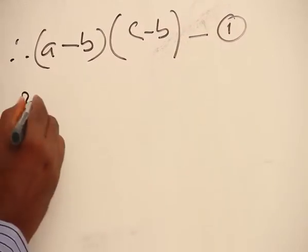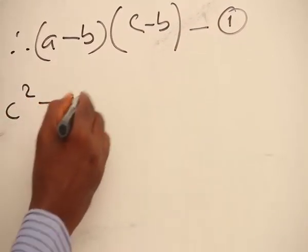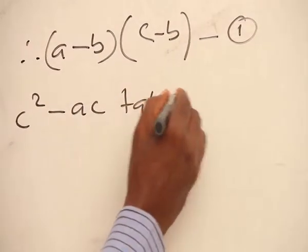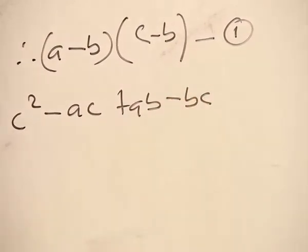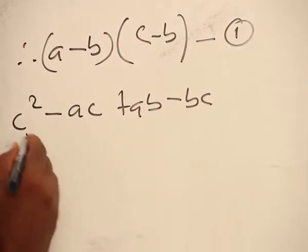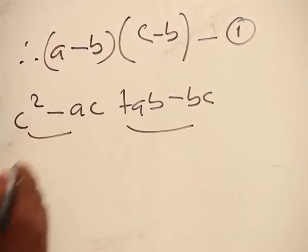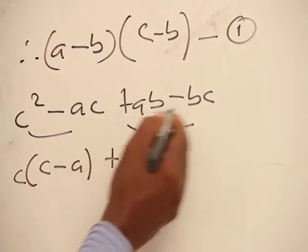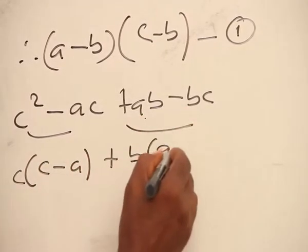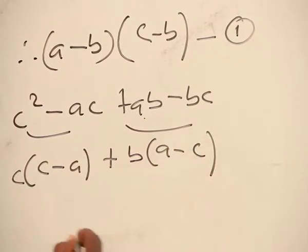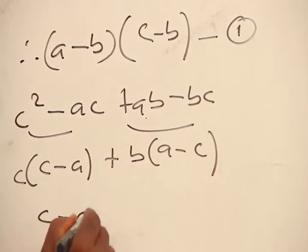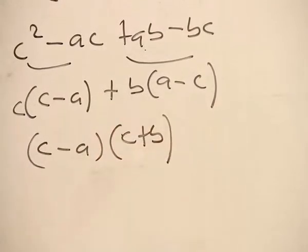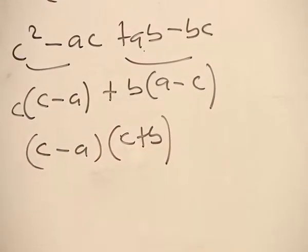Then we take the denominator: c squared minus ac plus ab minus bc. Now, if you look at this, c is common, namely c minus a. B is common, namely a minus c. So this becomes c minus a into c plus b, or b plus c, whichever one.